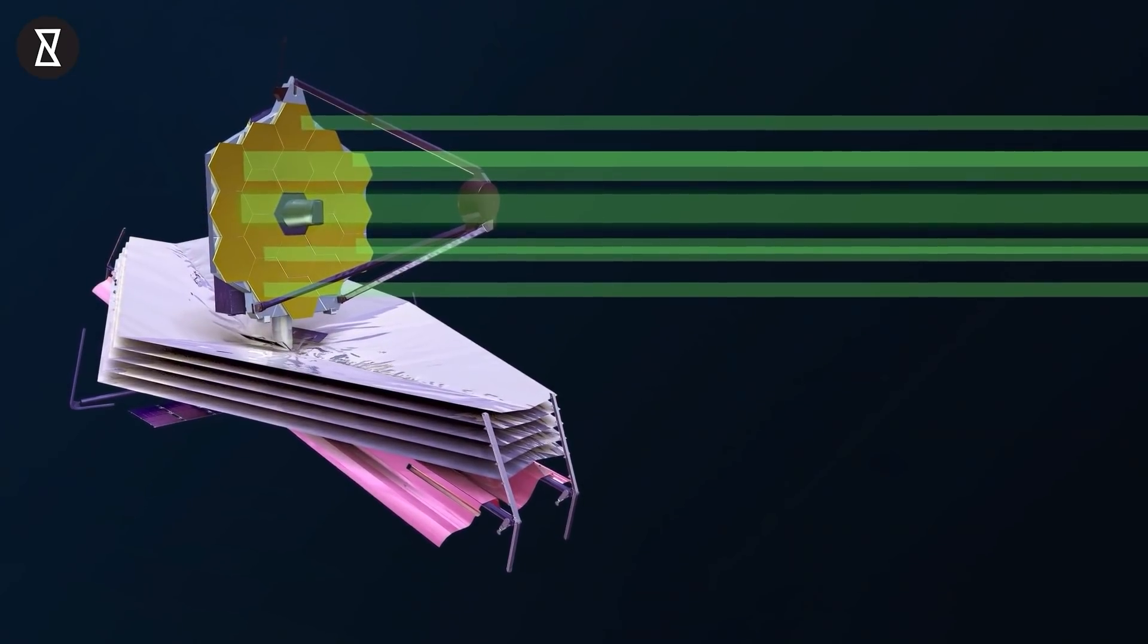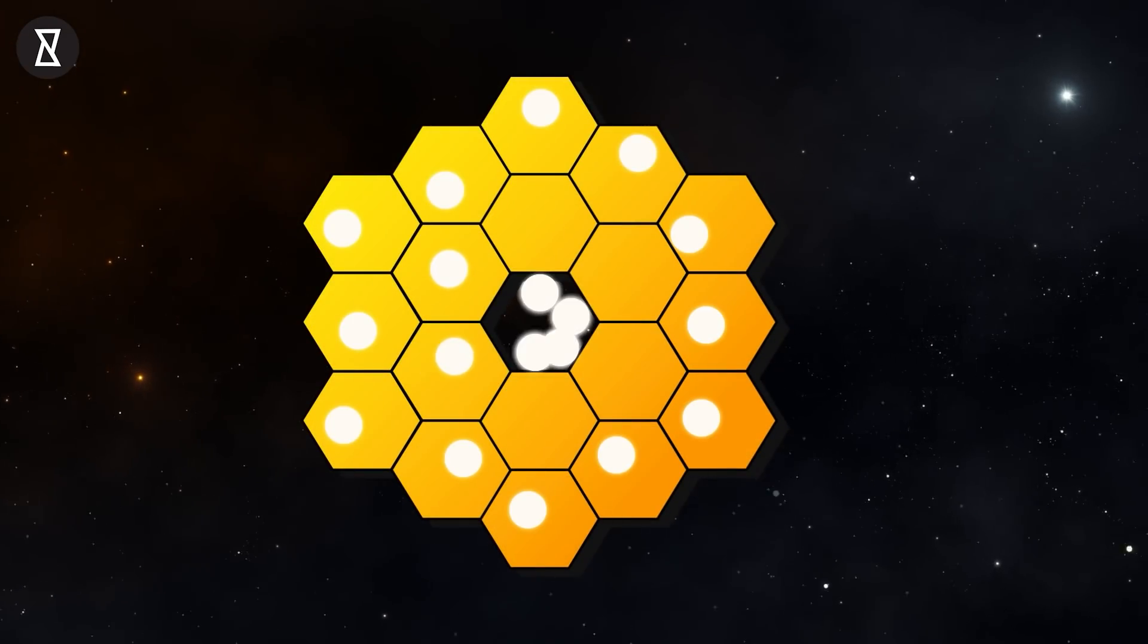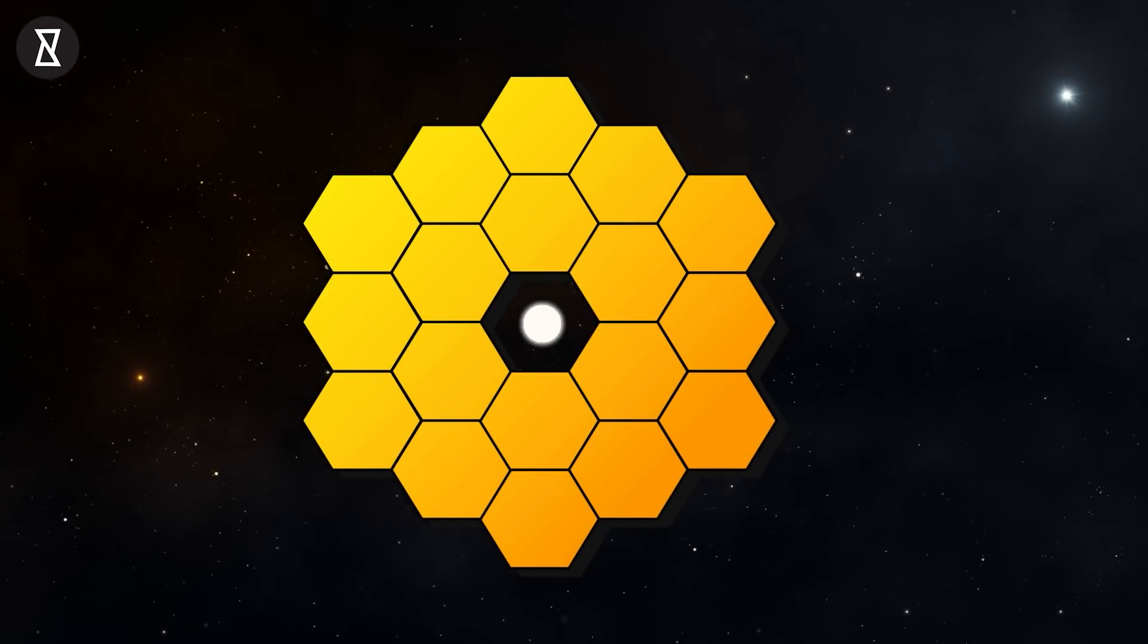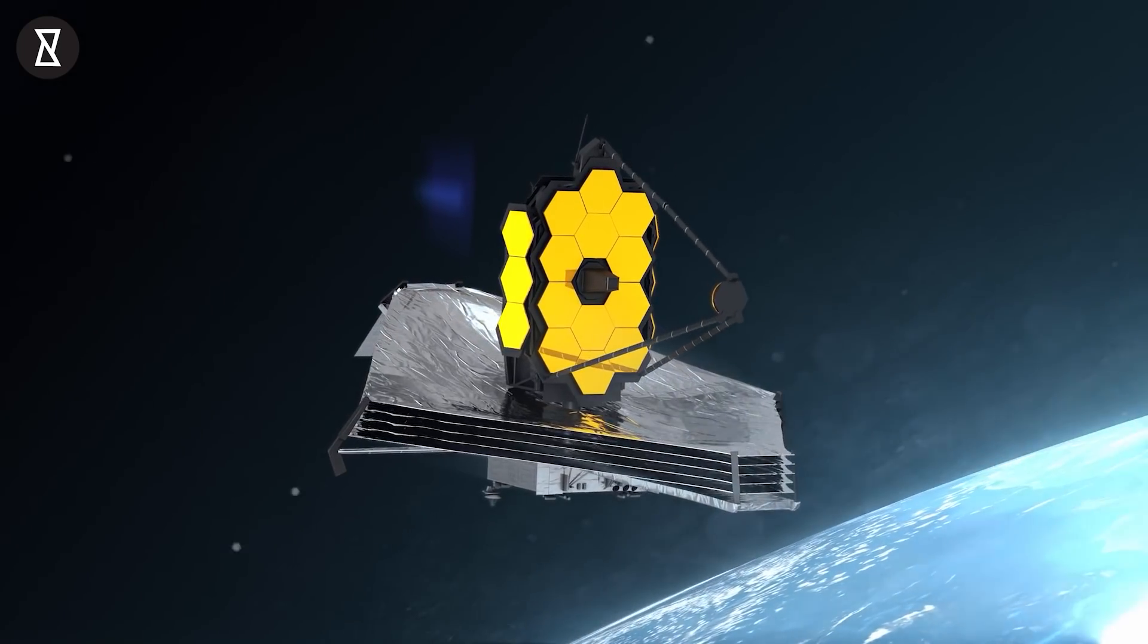That light could end up messing with the instrument's observations. The team at NASA is now preparing to align each of the 18 primary mirror segments, a painstaking process to ensure they are all focused on a single target.